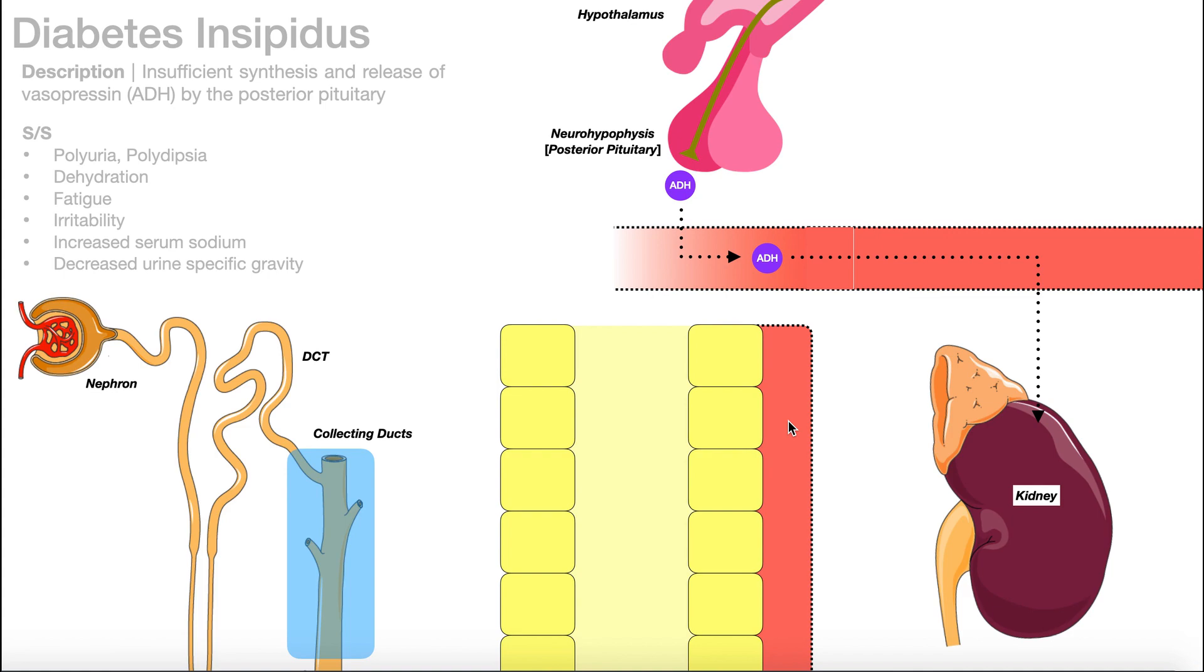Right here, we have a blowup of those collecting ducts. Here you have the duct cells that make up the duct. And then we have the lumen of the duct right here, the lumen of the tubule. And then over here is the blood where we might reabsorb or secrete certain substances. When antidiuretic hormone acts on the collecting duct cells right here, it stimulates them to insert aquaporins in both sides of their membranes.